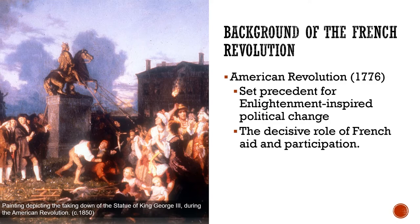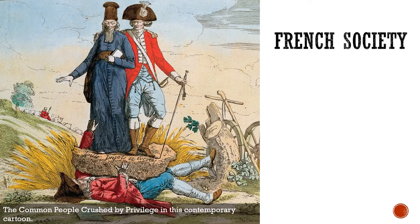Let's talk about French society, where the revolution would actually take place. French kings had become all-powerful, absolutist kings. During the Middle Ages, there were three groups: the nobles who fought, the clergy who prayed, and the peasants who worked. Then a new group emerged during the Renaissance: the townspeople, the merchant class, or the middle class. But legally, they were still stuck in the Middle Ages. Legally in France, you were a member of one of three groups called estates.